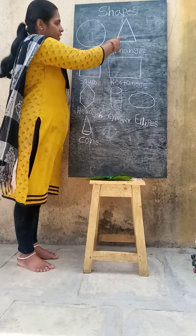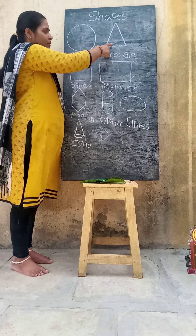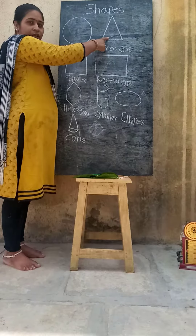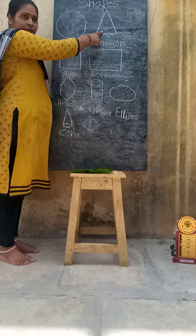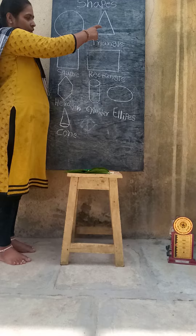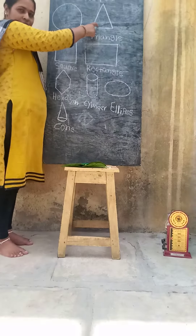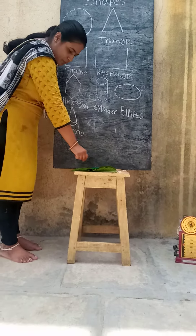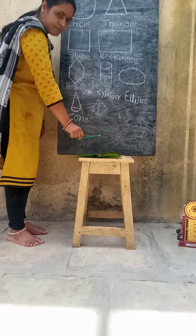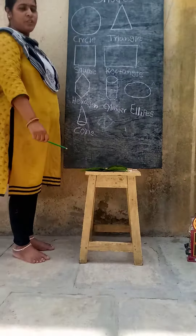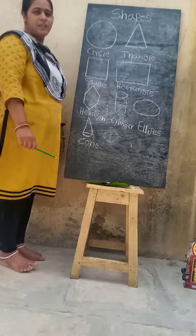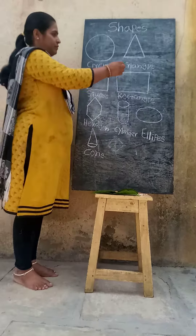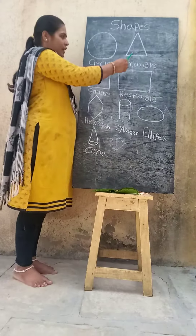It is a triangle. Say after me — triangle. It is? Triangle. Do you know samosa? Which shape is a samosa? Triangle. It is a triangle.